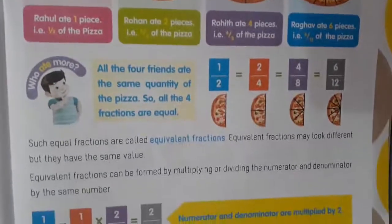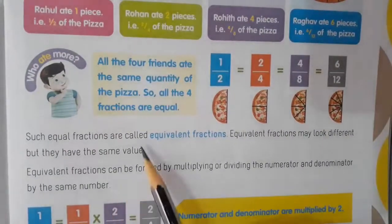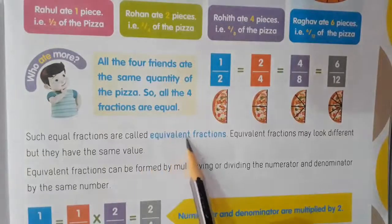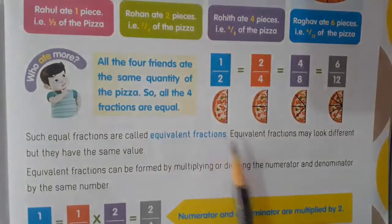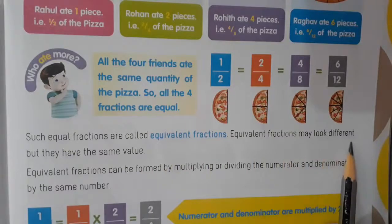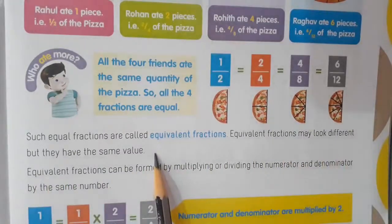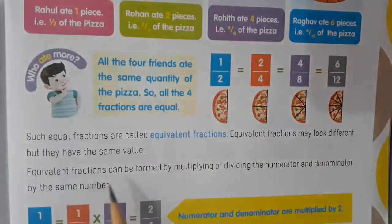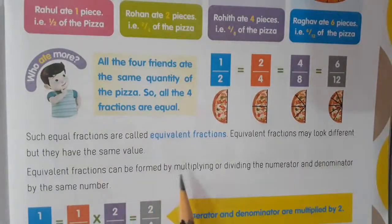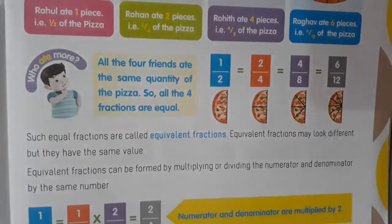Such equal fractions are called equivalent fractions. Equivalent fractions may look different but they have the same value. Equivalent fractions can be formed by multiplying or dividing the numerator and denominator by the same number.